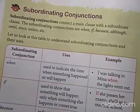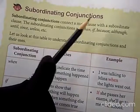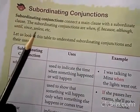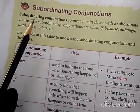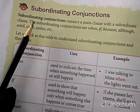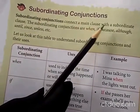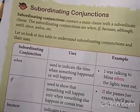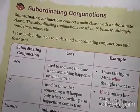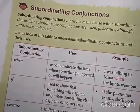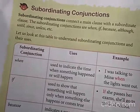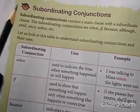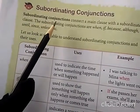Now we have subordinating conjunctions. Previously we learned coordinating conjunctions; now we will learn subordinating. Subordinating conjunctions connect the main clause with the subordinate clause. If there are two clauses, the first will be the main clause — the very important part of the sentence — and the second one will be dependent on the first part. The words that join these two clauses are called subordinating conjunctions.